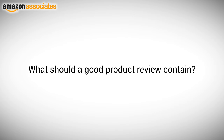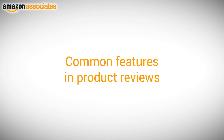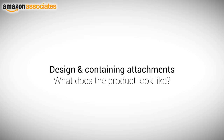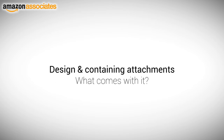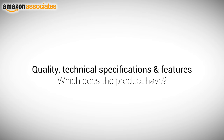It is important that you own the product, or you can borrow the product for your review. What should a good product review contain? Some people recommend using a template for writing reviews — there is no need for that, but when you start writing your first reviews it can be really helpful. Common features in product reviews include: design and attachments — what does the product look like and what parts does it come with? Quality, technical specifications and features — which quality, specifications and features does the product have?